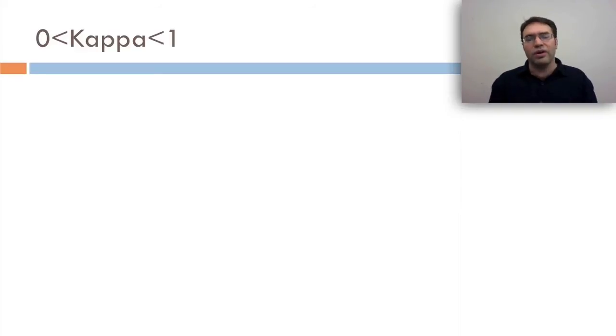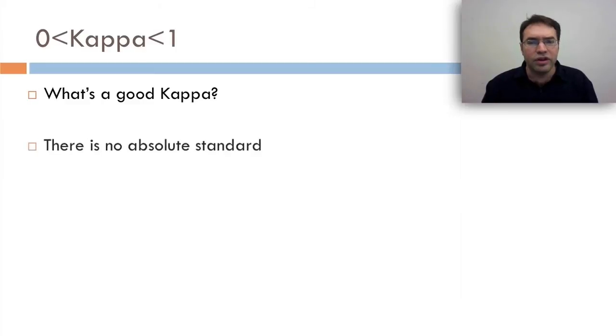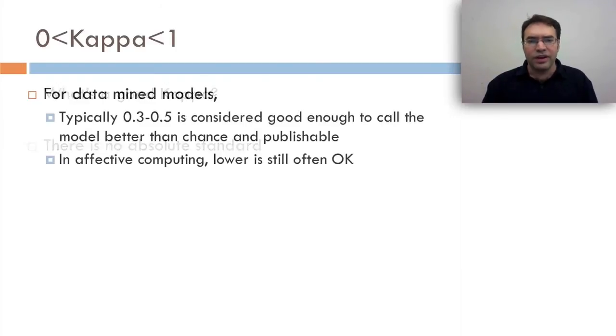What if kappa is between zero and one? Well, that's the hard case. What's a good kappa in that range? There's no absolute standard. If you've got a data mine model, typically 0.3 to 0.5 is good enough to call the model better than chance and go ahead and publish it. In affective computing, which is a really hard problem, lower is still often okay. And if you send something to certain conservative ed journals, then they're going to want to see a 0.9, which no one's ever seen for anything other than a completely well-defined construct where you define everything down to the finest detail.